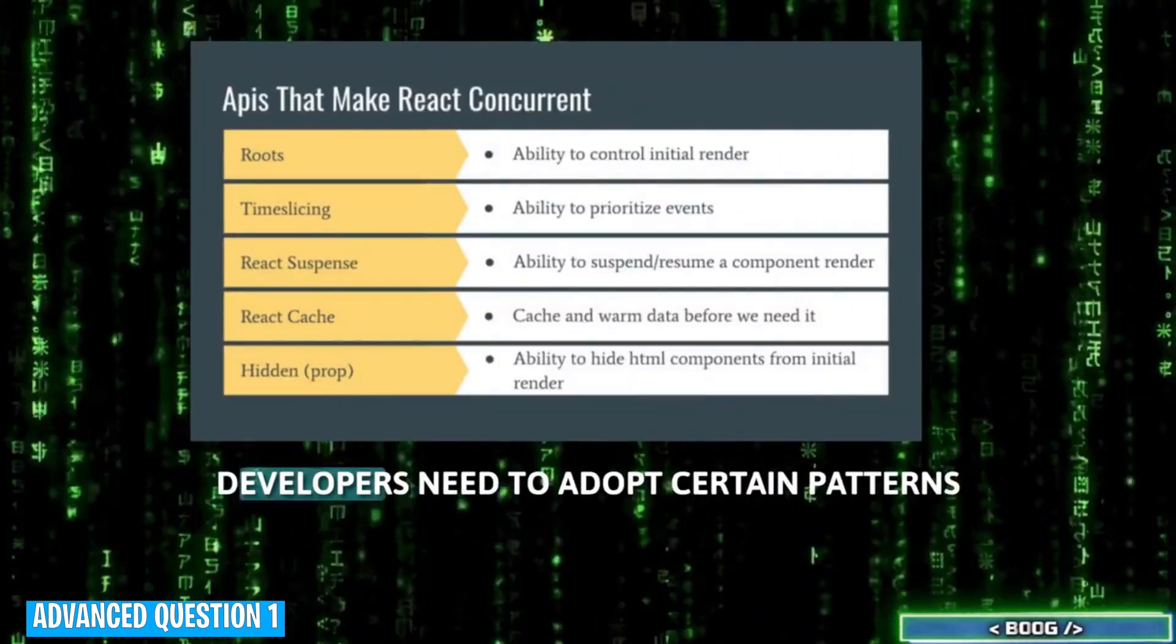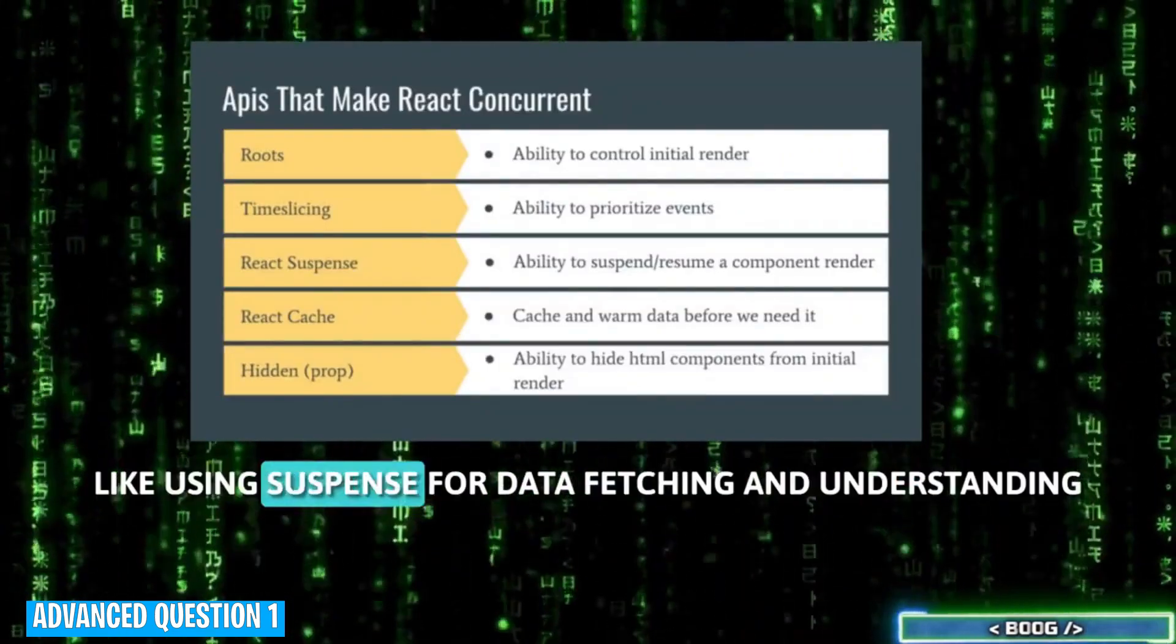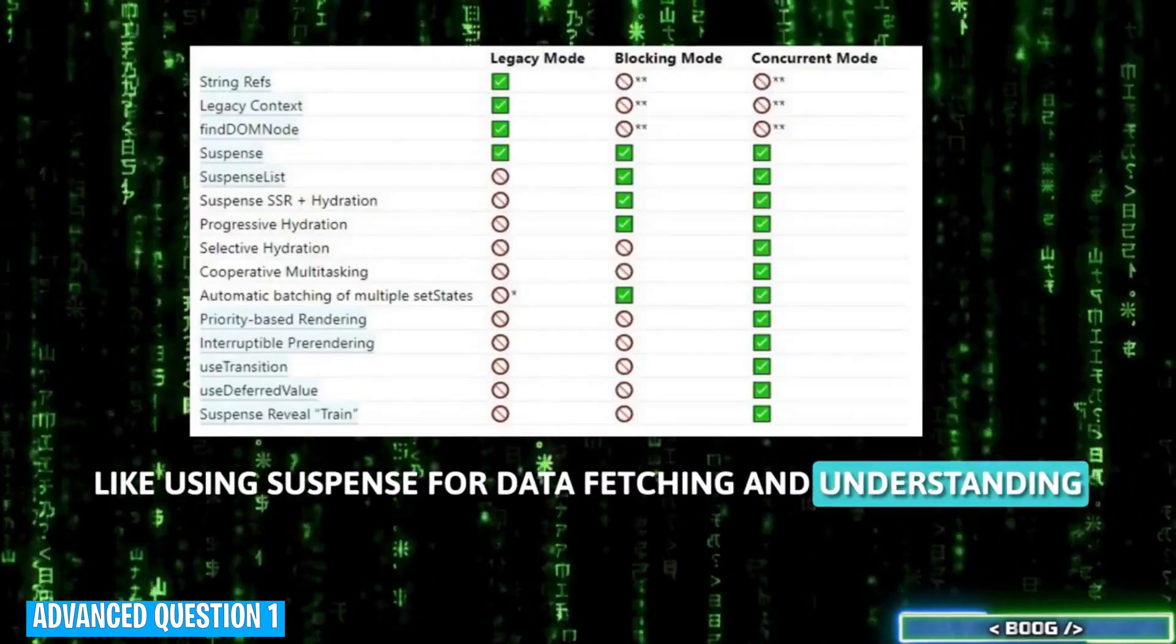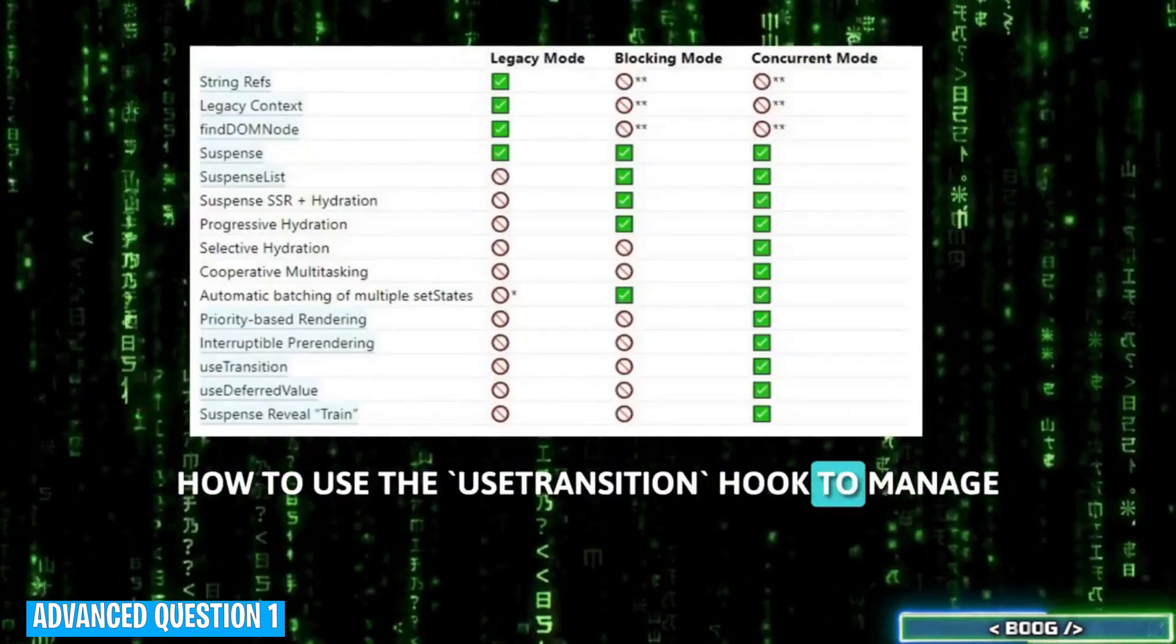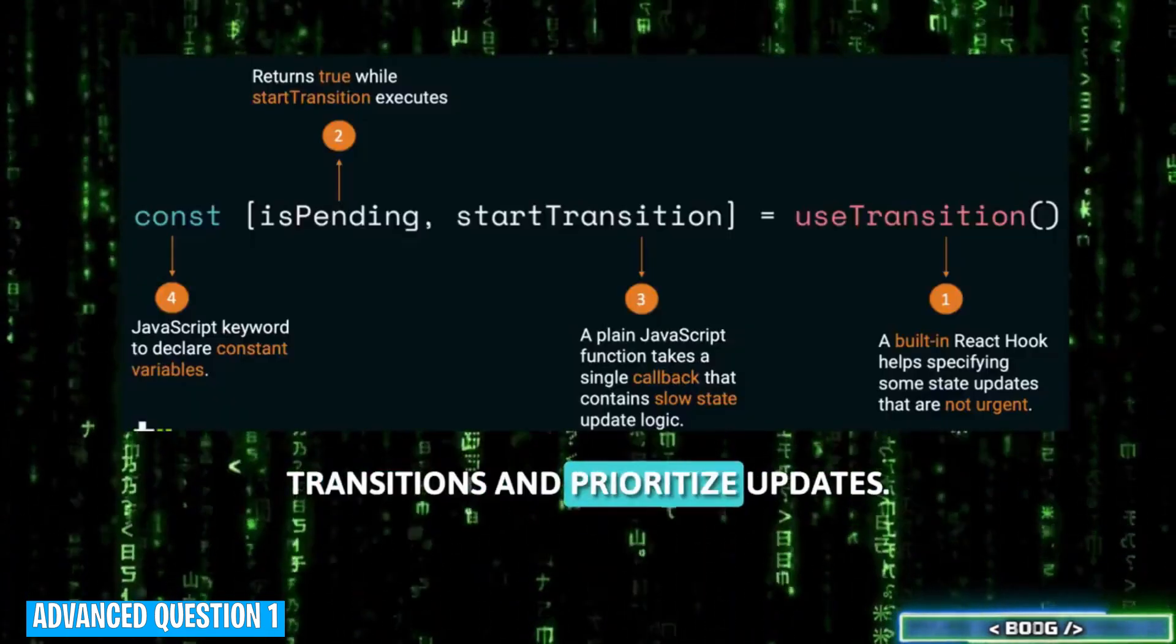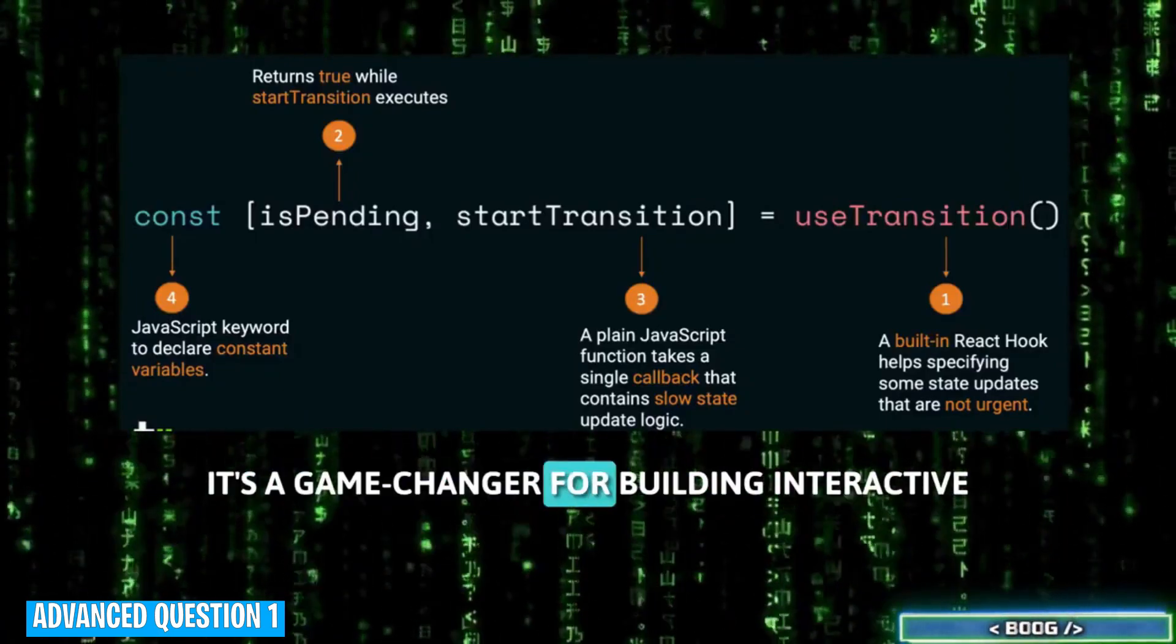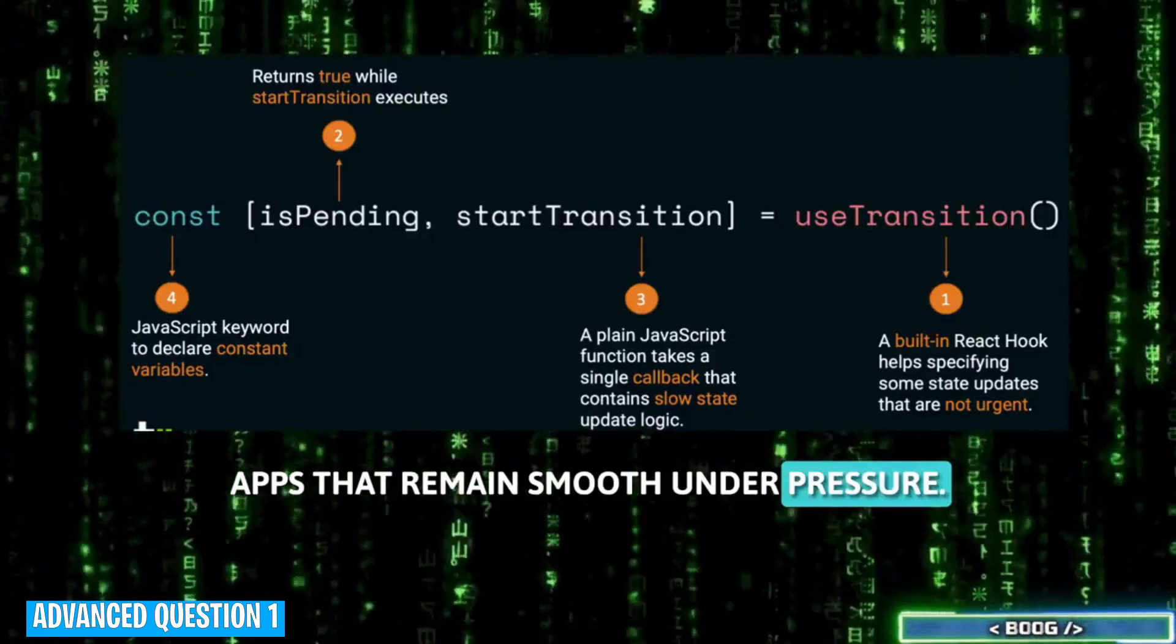To leverage concurrent mode, developers need to adopt certain patterns like using suspense for data fetching and understanding how to use the useTransition hook to manage transitions and prioritize updates. It's a game changer for building interactive apps that remain smooth under pressure.